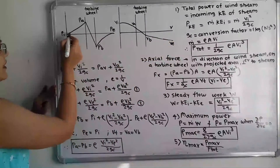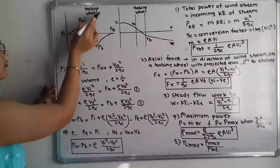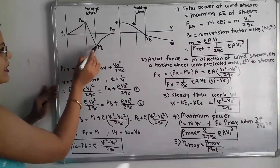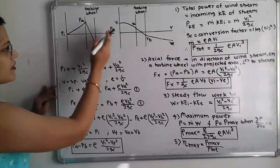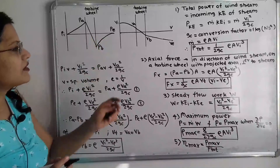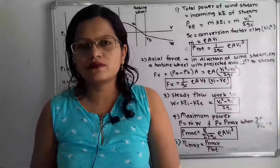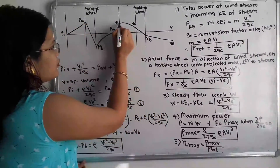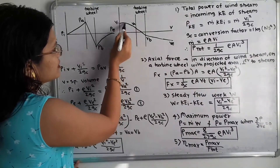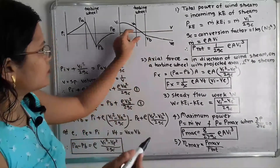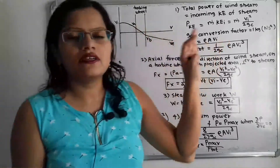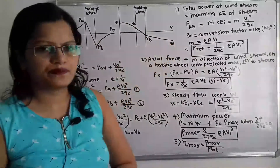Observing the diagrams: the ambient pressure line shows that before the turbine, pressure increases to pa, then there is a sharp pressure drop from pa to pb through the turbine wheel, after which pressure recovers back to ambient (pe). For velocity, the incoming velocity is higher than ambient, then decreases gradually through the turbine, reaching exit velocity ve.